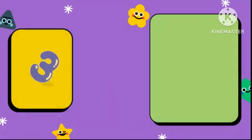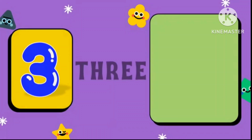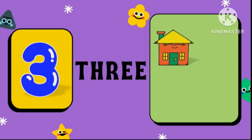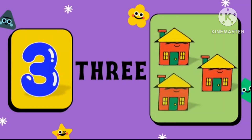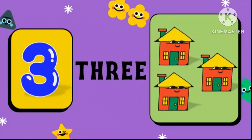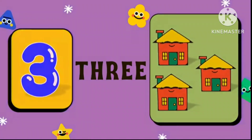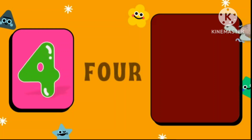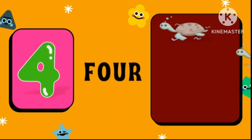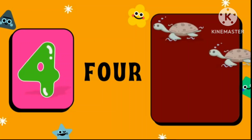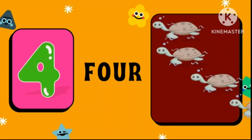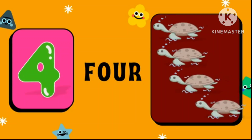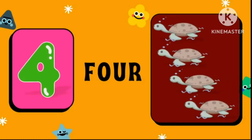Number 3, T-H-R-E-E. 1, 2, 3 — 3 huts. Number 4, F-O-U-R. 1, 2, 3, 4 — 4 turtles.